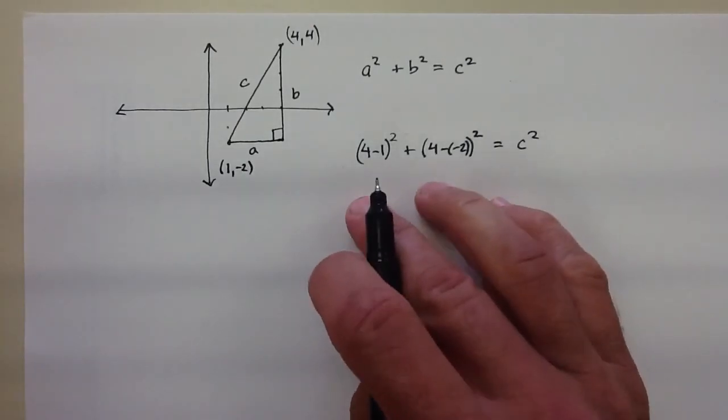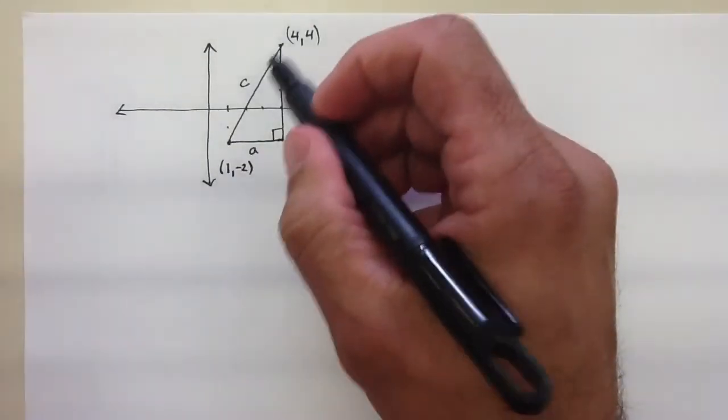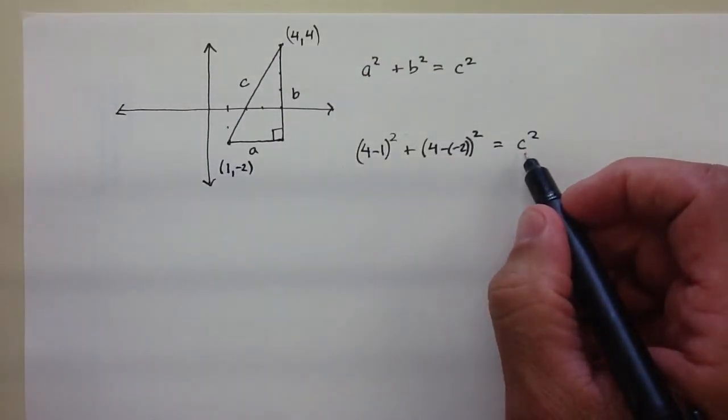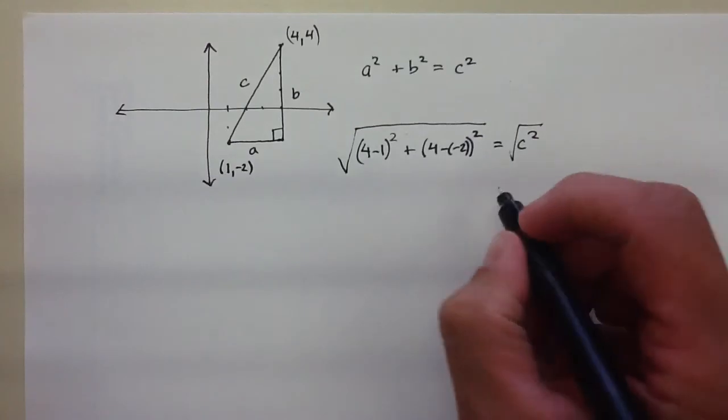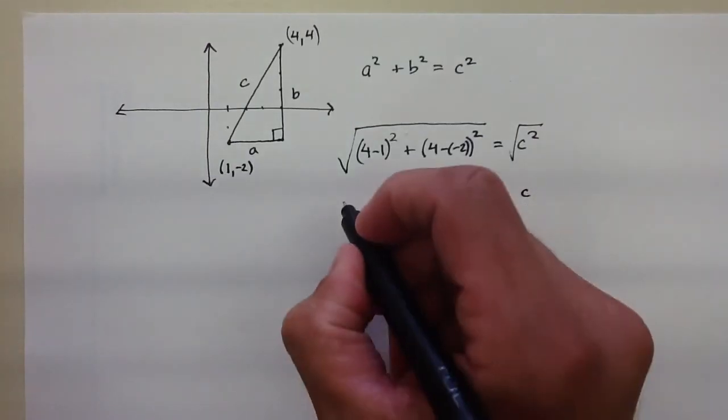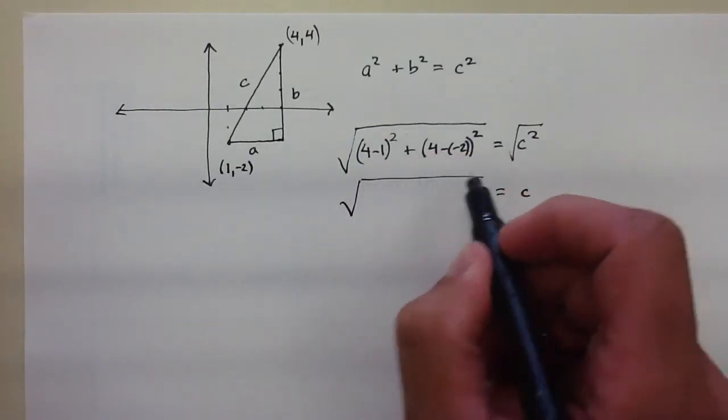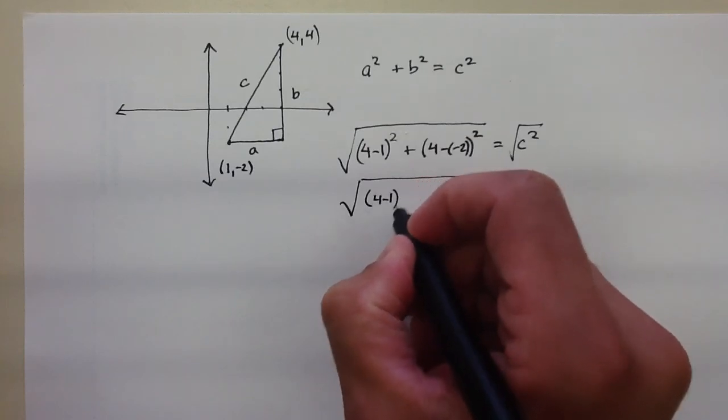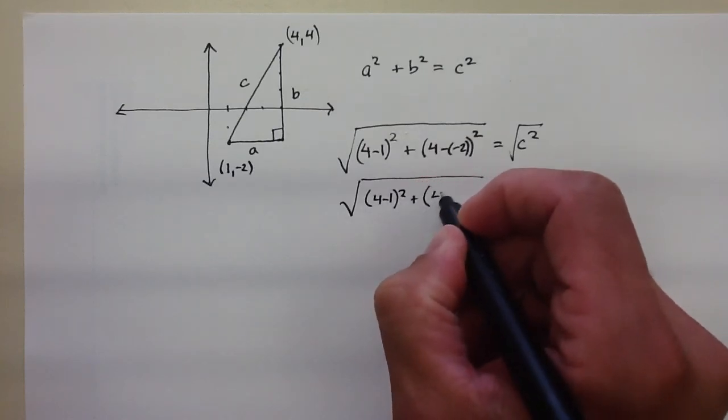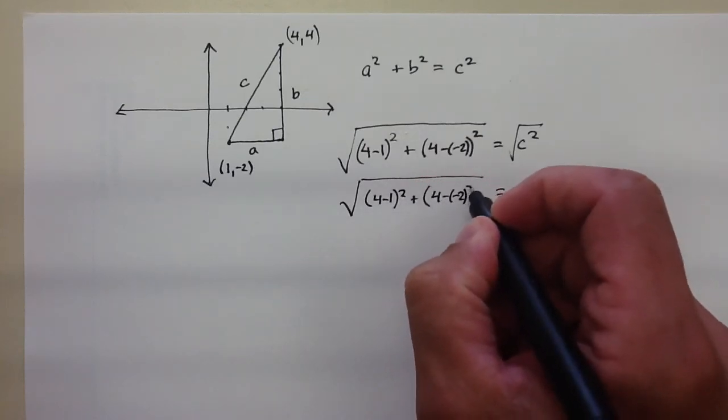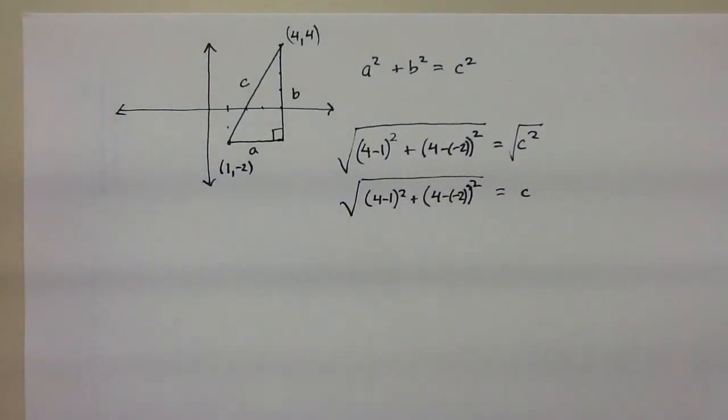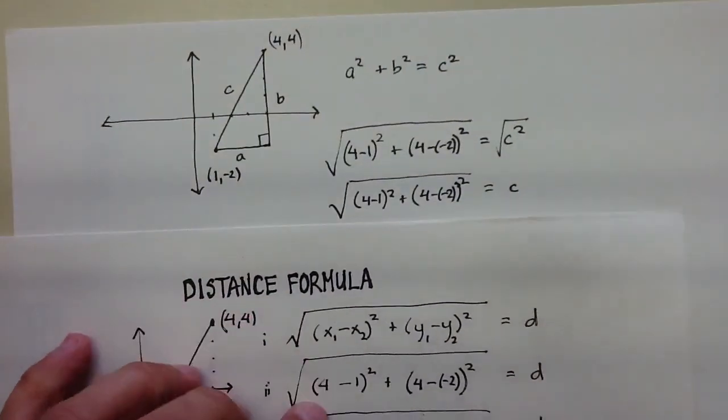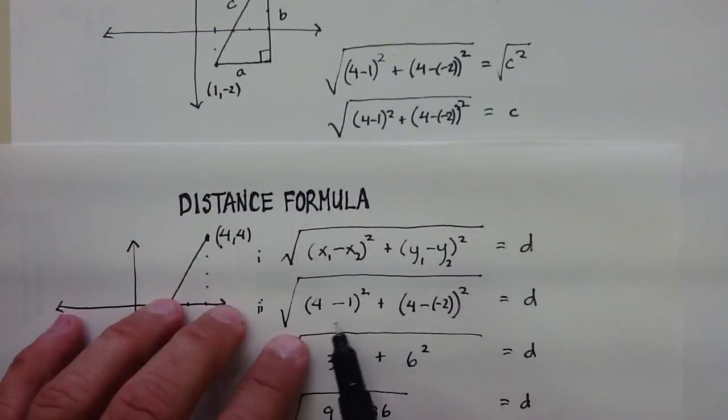This should be starting to look familiar to you. If I wanted to solve for just the distance c, I'll take the square root of both sides, and look what you get. (4 - 1)² plus (4 - (-2))² squared, and there is the exact same thing as your distance formula.